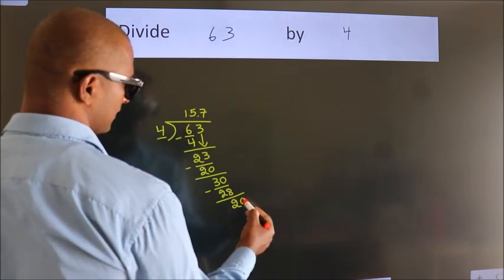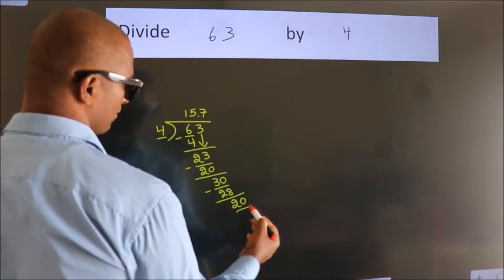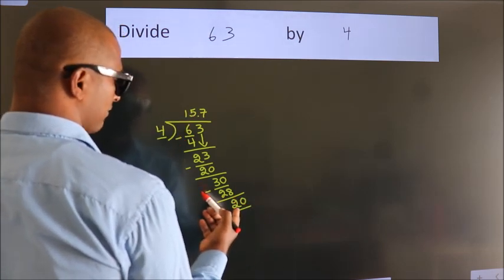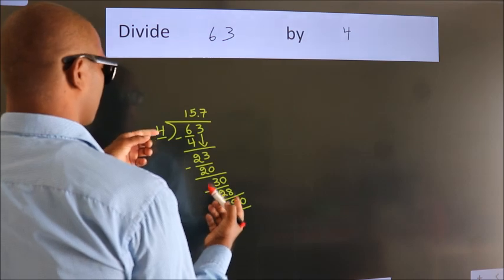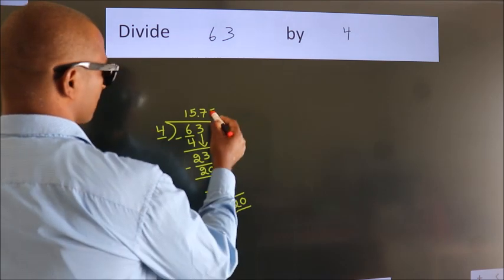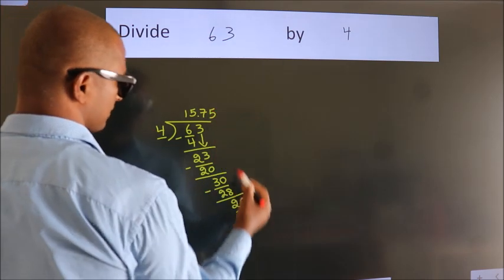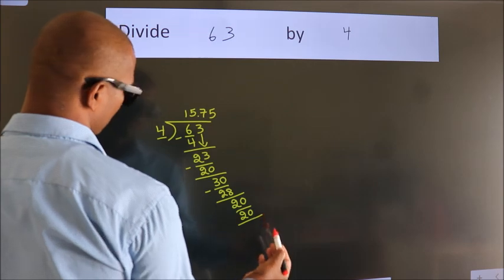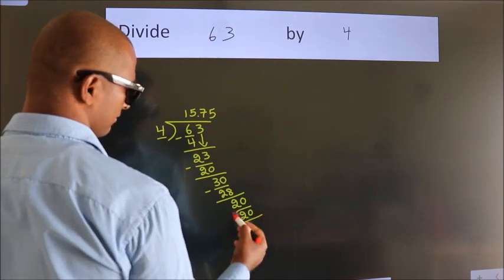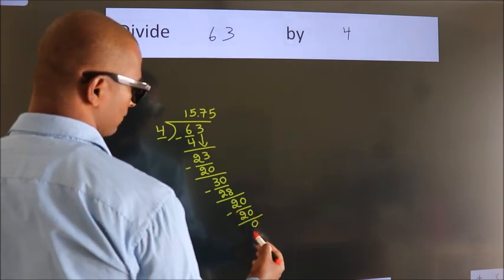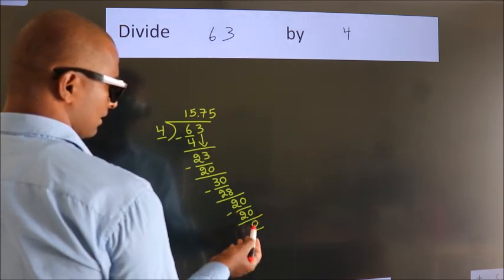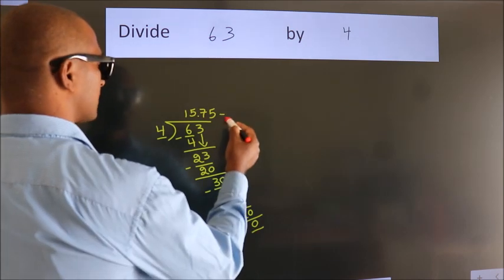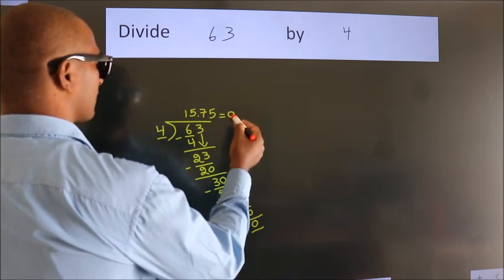After this, we already have the decimal, so directly take 0. So 20. When do we get 20 in the 4 table? 4 fives 20. Now we subtract. We get 0. We got remainder 0, so this is our quotient.